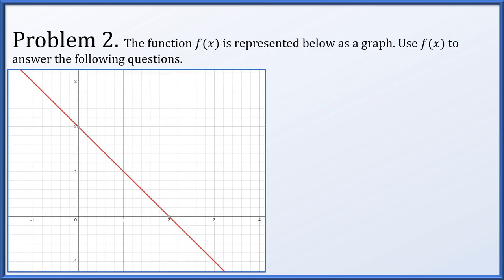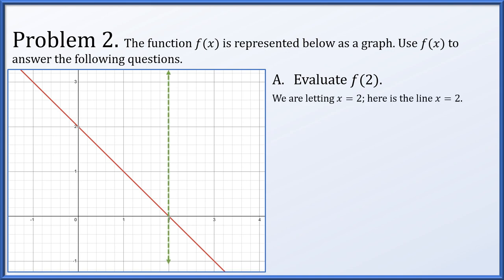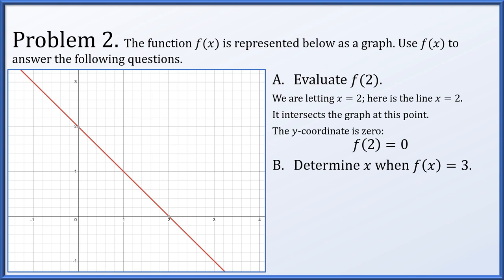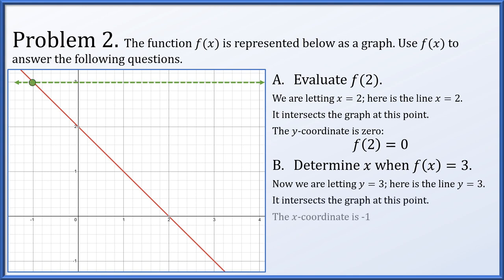For problem two, the function f of x is given by the graph below. Use the graph of f of x to answer the following questions. First, what is f of 2? We set x equal to 2 and look for where the vertical line x equals 2 intersects the graph of our function. It intersects at a point with coordinate 0, therefore f of 2 is equal to 0. Next, we are asked to determine the x value so that f of x is equal to 3. Since 3 is a y value, we put the horizontal line y equals 3 on the graph and find it intersects at x equals negative 1. Therefore, when f of x is equal to 3, x must be equal to negative 1.